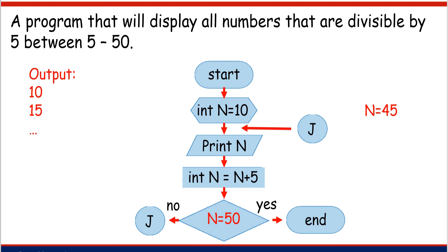Let's assume we already have 45 as the value of n. n equals 50, or 45 equals 50 — the answer is still no, so we go to the no direction. Enter and exit the J on-page connector, then print 45. Int n equals n plus 5: 45 plus 5 is equal to 50 — the new value of n is 50. n equals 50, or 50 equals 50 — the answer is yes, so we go to the yes direction, and the flowchart is finished. That's all for today. Hope you learned something. Goodbye and thank you.